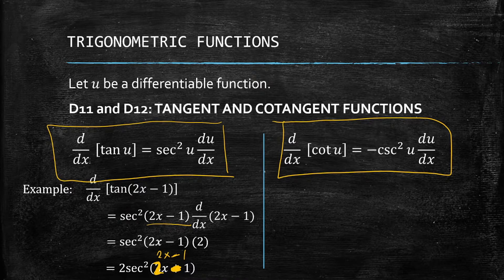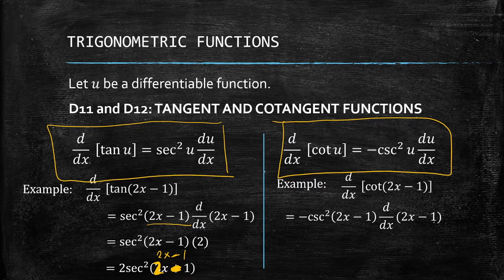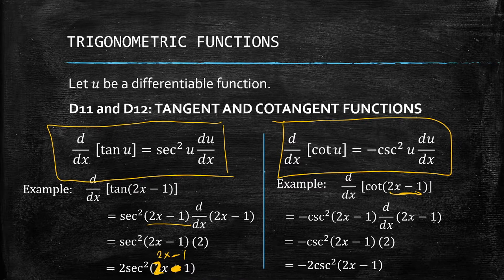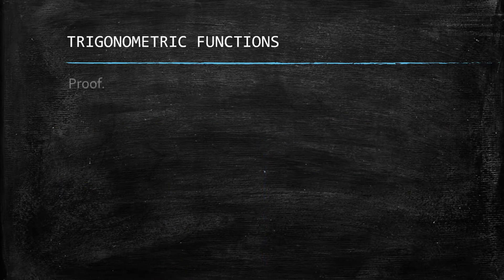Let's have an example: the derivative of cotangent of (2x minus 1). We simply write negative cosecant squared of (2x minus 1), then get the derivative of (2x minus 1), which is 2. Rearranging, we get negative 2 cosecant squared of (2x minus 1).